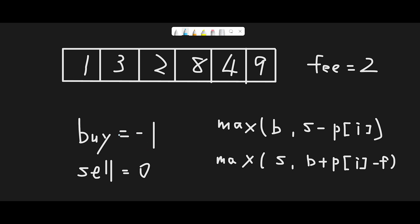We initialize the buy variable with -price[0] = -1, and the sell variable with 0. The reason is that on the first day the stock price is 1. Since we don't sell anything, profit is 0. So if we buy the stock on the first day, the total profit should be -1. Sell profit should be 0 on the first day. Then we start iterating from the second day.